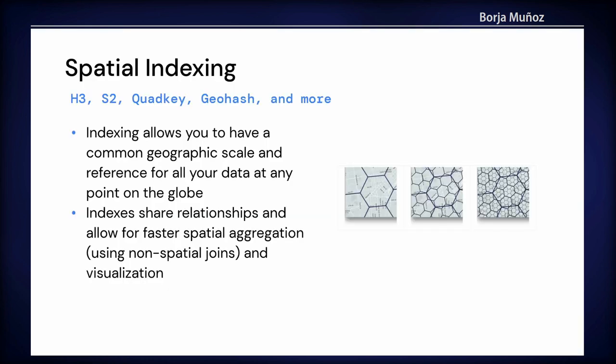The second thing we need to do geospatial analytics at scale is spatial indexing. When you are trying to do geospatial analysis, you see massive datasets where we have hundreds of millions or billions of features. If you are doing spatial joins with this kind of dataset, it's really difficult. What we are doing is using discrete global grid systems, like QuadKey or H3, in order to have a common geographic scale and the same reference for all the data.